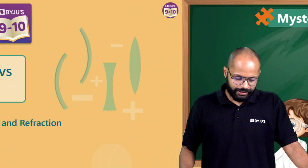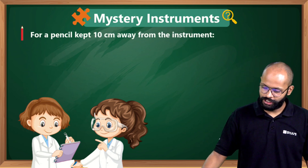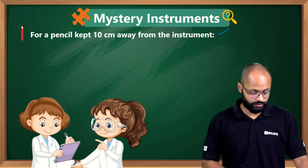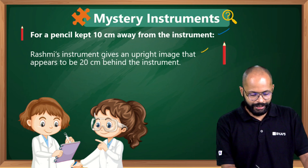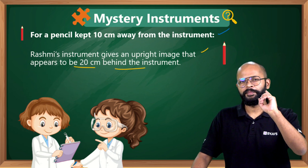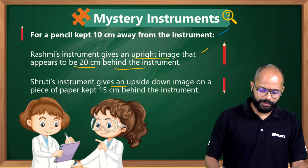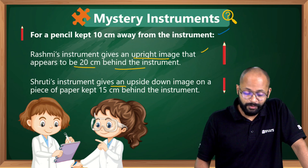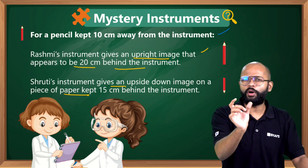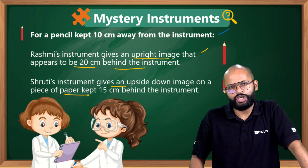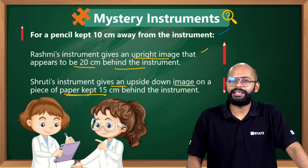Let's take a nice case. There are two girls, Rashmi and Shruti, doing some experiments. For a pencil kept 10 centimeters away from the instrument, Rashmi made an observation that her instrument gives an upright image that appears to be 20 centimeters behind the instrument. Important keywords here: an upright image, 20 centimeters behind the instrument.